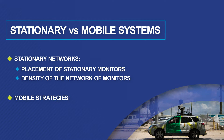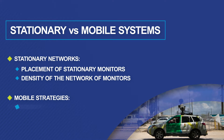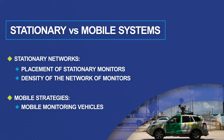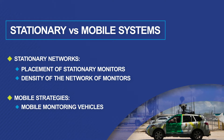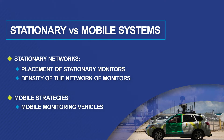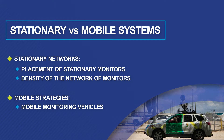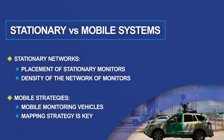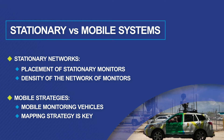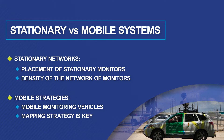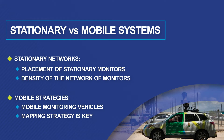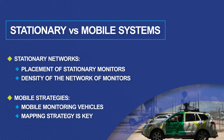For mobile strategies, what vehicles should you use for mobile monitoring, and where should they drive? How many times does a driver need to pass a location to characterize its pollution adequately?